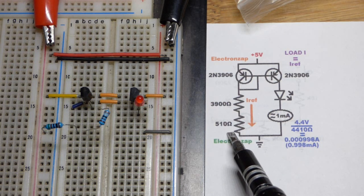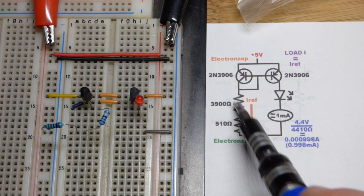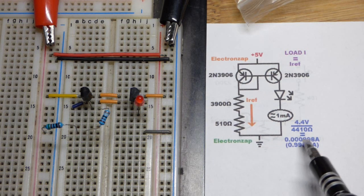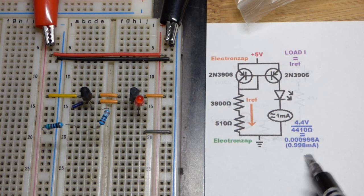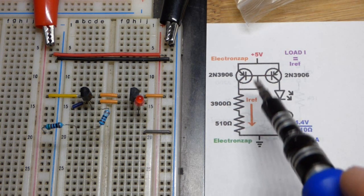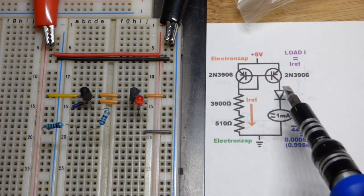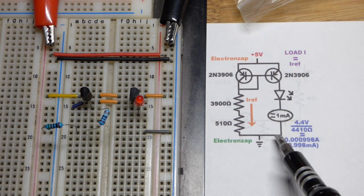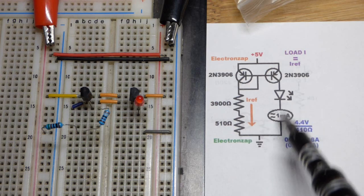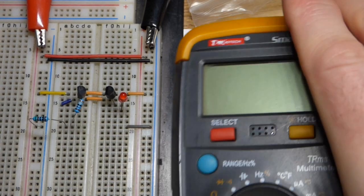We have about 4.4 volts at this point and that's going across this resistance here, which is about 4,400 ohms. So 4.4 volts divided by 4,400 ohms - the math is fairly easy - is about 1 milliamp of current, and ultimately that transfers over to this transistor.